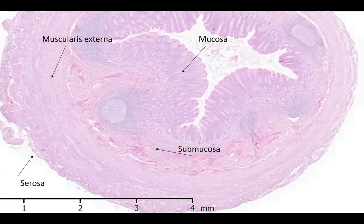There are four layers to the cross-section of the appendix. These are the mucosa, the submucosa, the musculus externa, and the serosa.